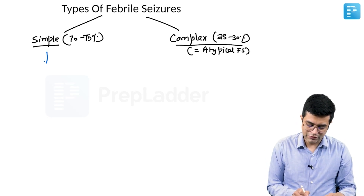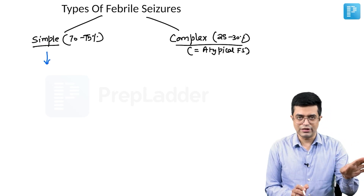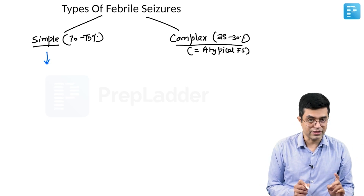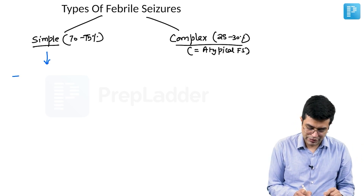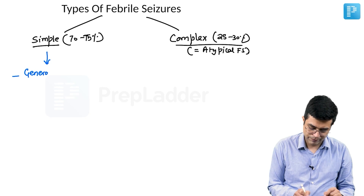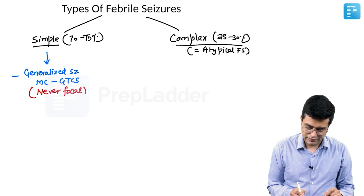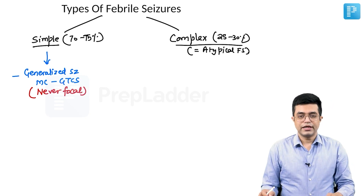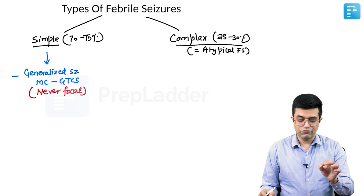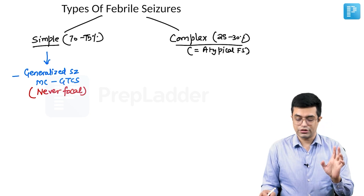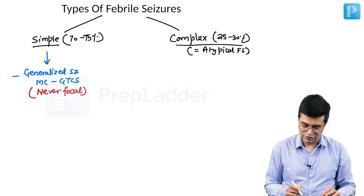What is a simple febrile seizure? It will have three characteristics. First, they will be generalized seizures — most commonly of the GTCS variety. They are never focal. AOCN guidelines mention them as non-focal febrile seizures.